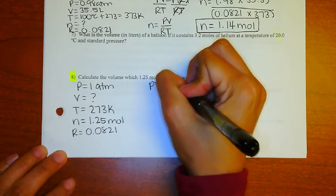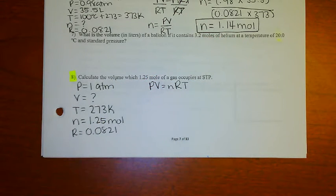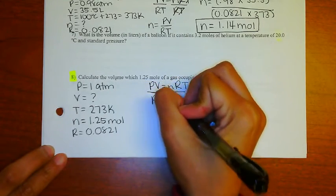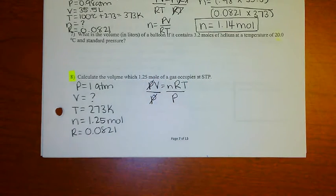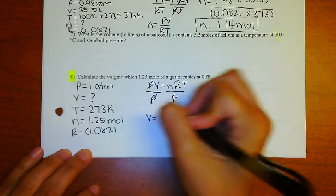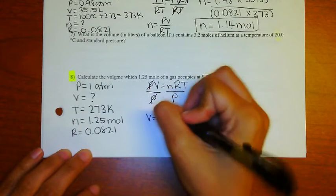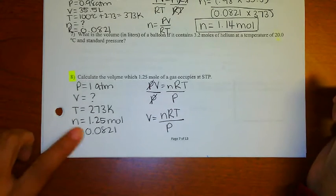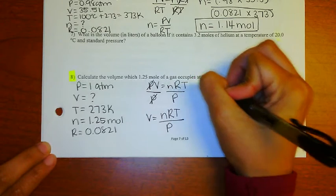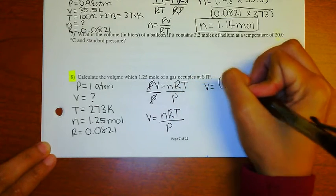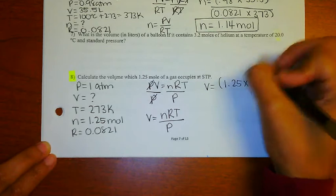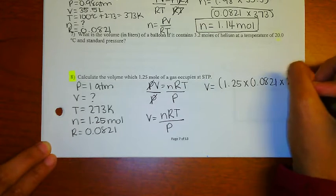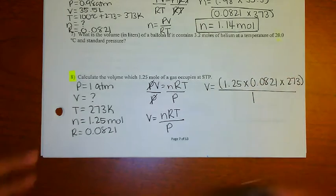Using PV = nRT and solving for V, I divide both sides by P so the P's cancel on the left side. That gives us V = nRT / P. Plugging in: V = (1.25 × 0.0821 × 273) / 1.